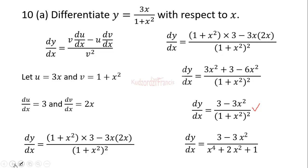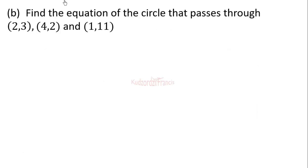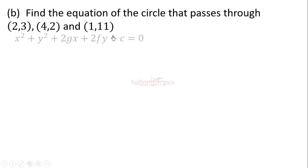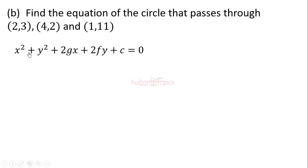Now proceeding to part B: find the equation of the circle that passes through (2, 3), (4, 2), and (1, 11). We let the equation of the circle be x squared plus y squared plus 2gx plus 2fy plus c equals zero — this is the general form of the equation of a circle.